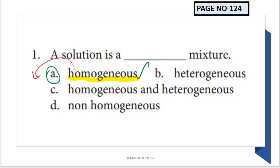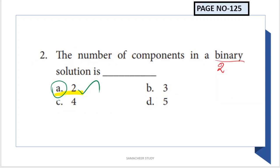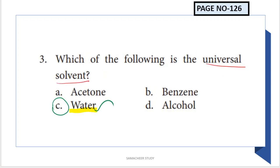Next question: the number of components in a binary solution is two. Binary means two, so the number of components is two - that is the right answer. Next question: which of the following is the universal solvent? The universal solvent is water.